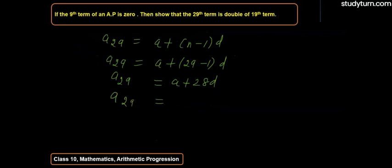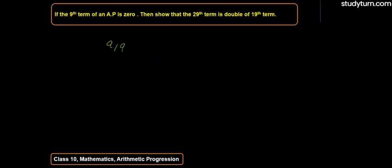For the 19th term: a_19 = a + (19-1)d = a + 18d.